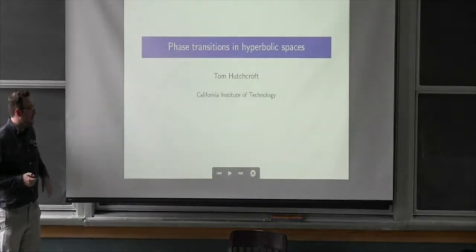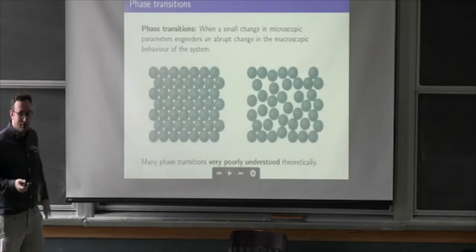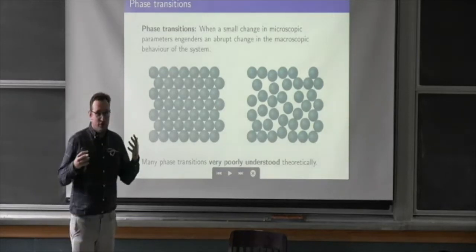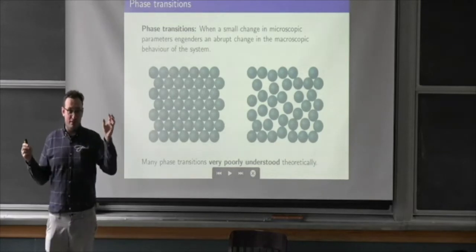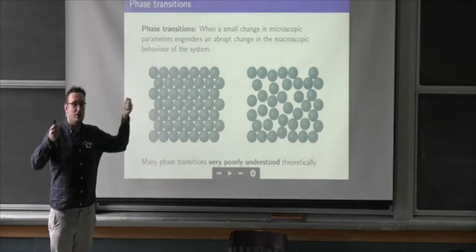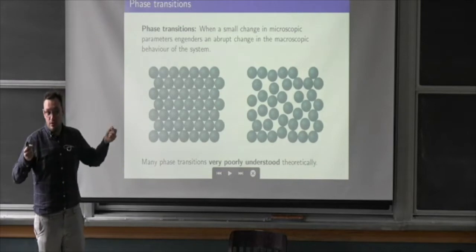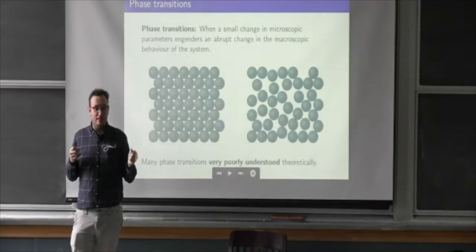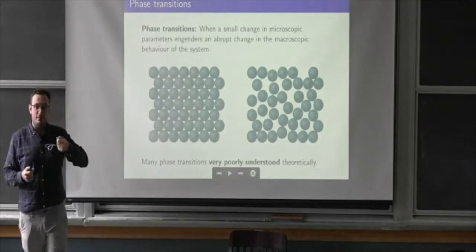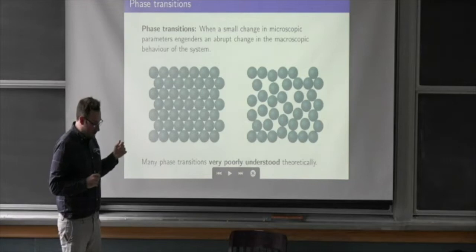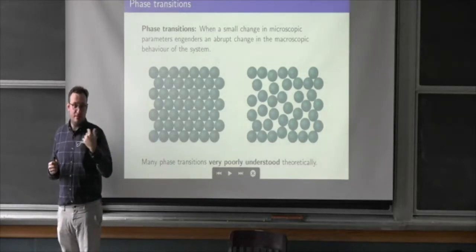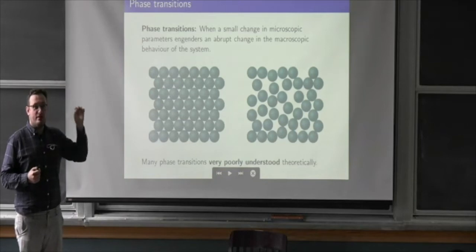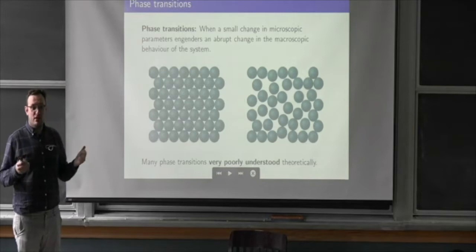I want to tell you about phase transitions in hyperbolic spaces, but to start with, let's talk about what I mean by a phase transition as a mathematician. Generally the picture is as follows: you have some kind of large system with many microscopic constituents that interact with each other, possibly with some spatial structure. The system is described by parameters which determine the interactions, like temperature or pressure, that can be varied continuously. A phase transition occurs when varying this parameter through some special value causes an abrupt, qualitative, perhaps discontinuous change in the behavior of the system.